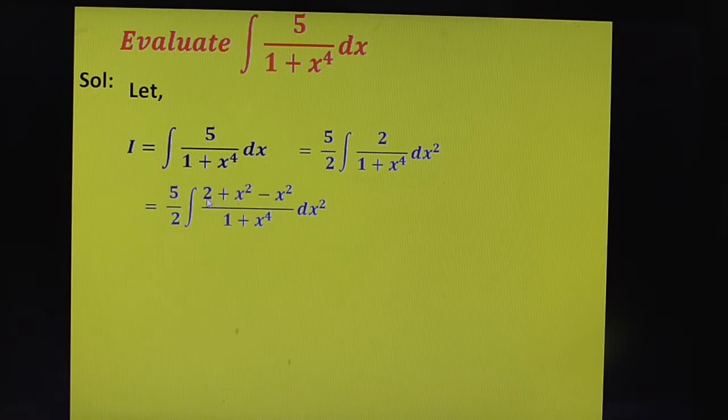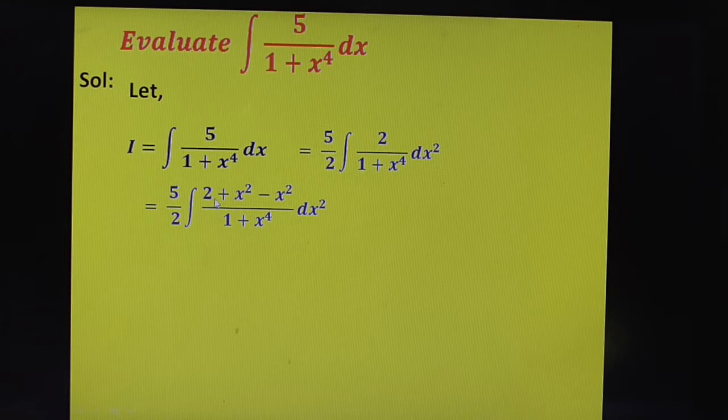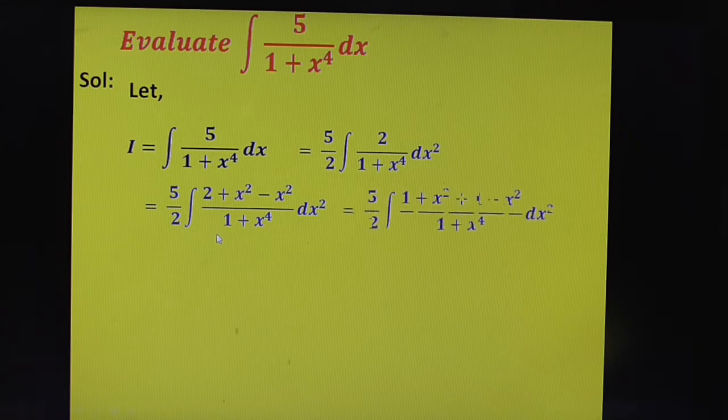Write this as 1 plus 1 plus x square minus x square. Therefore, this is nothing but 1 plus x square plus 1 minus x square. You get 1 plus x square plus 1 minus x square by 1 plus x power 4.